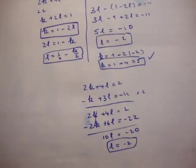I'll be able to cancel these. You'll have 10l is equal to minus 20. l is equal to minus 2. You do the exact same thing with k if you want. So that's exercise 1b, question 4.